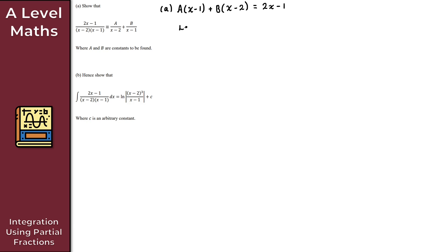If we let x equal 2, the B term becomes B times (2 minus 2), which is 0, so B disappears and we can solve for A. We get A times (2 minus 1), which is just A, equal to 2 times 2 minus 1, giving us 3. So A is equal to 3.